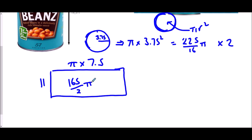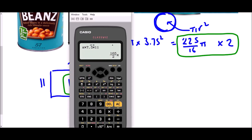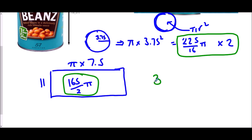To get the total surface area, add the two circles and the rectangle: 165/2 pi plus two times 225/16 pi. On the calculator that gives 885/8 pi. Converting to a decimal gives 347.54 centimeters squared as the surface area of the cylinder.